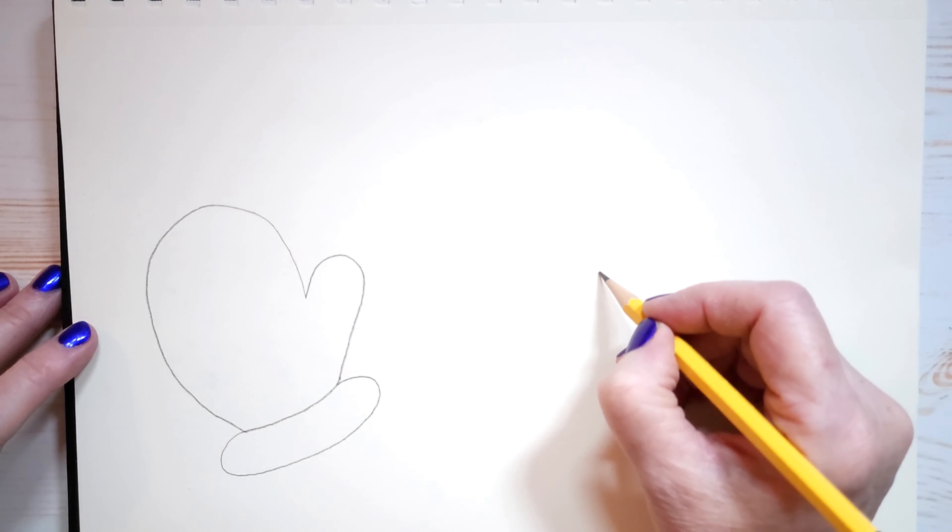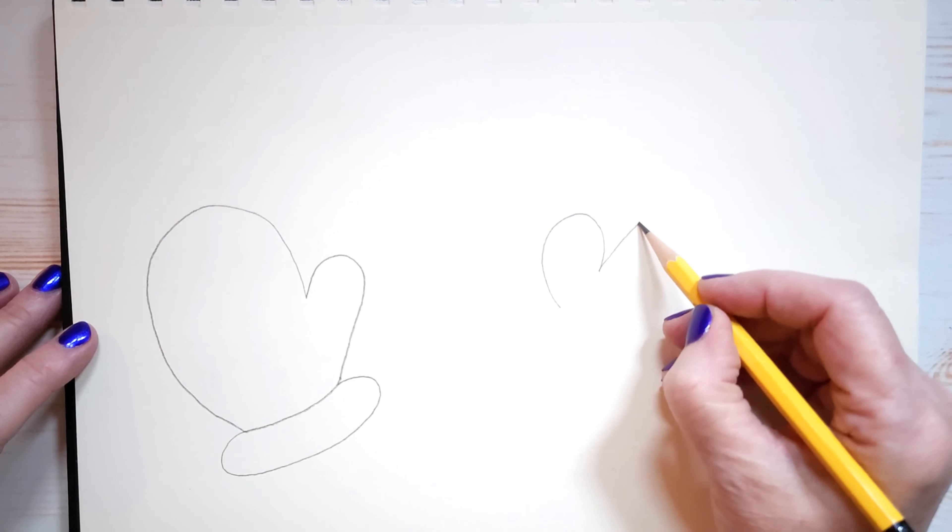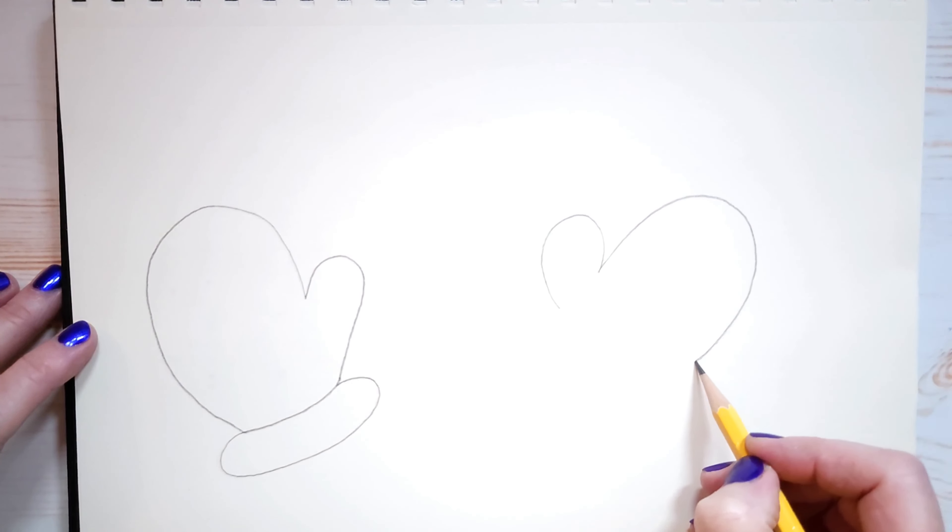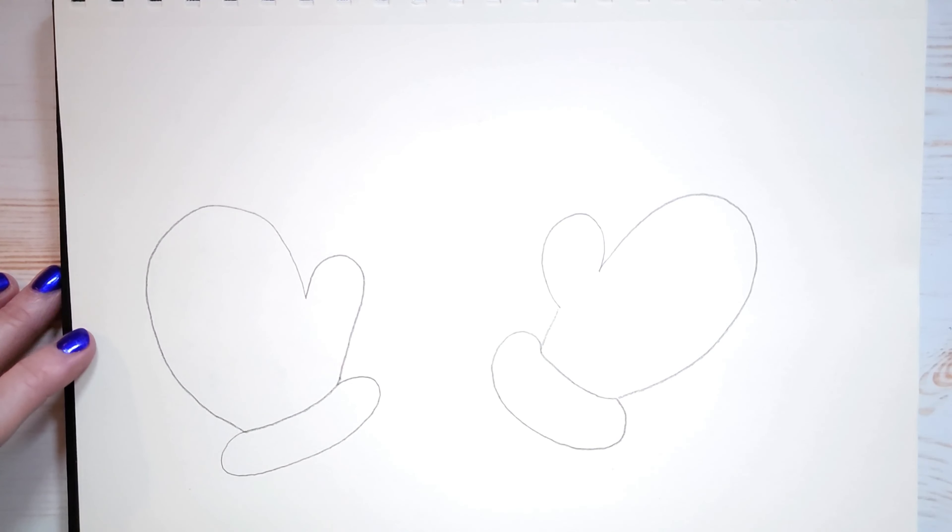Now I'll draw the other mitten. We'll have the thumb here. And then the mitten itself. A little bit of a semi-circle. And then an oval shape for the bottom of the mitten. And we want them attached. So we're going to draw a line with a circle. And we're going to draw it again. All the way around again. There we go.